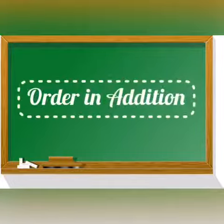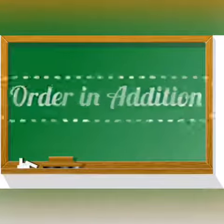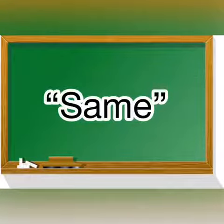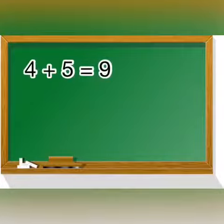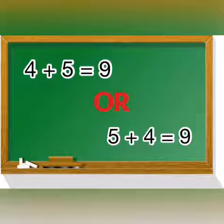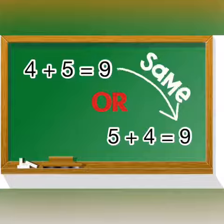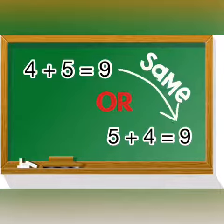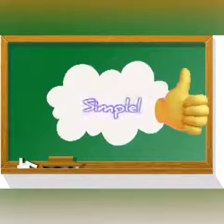Next one is order in addition. In this we can add the numbers in any order. We get the same sum each time. For example, if I write 4 first, means 4 plus 5 equals 9. And in the second condition if I write 5 first and then 4, means 5 plus 4, then also I will get the same answer, that is 9. Simple kids.